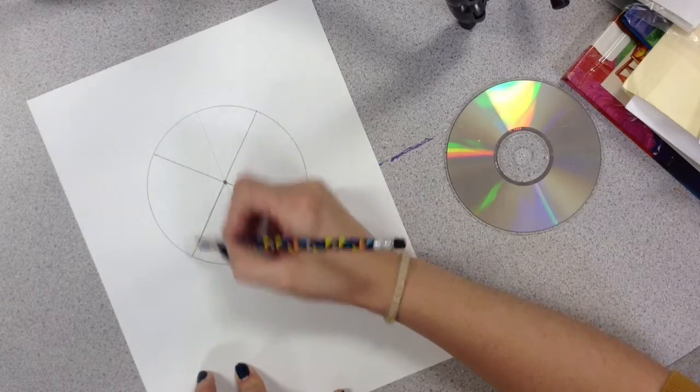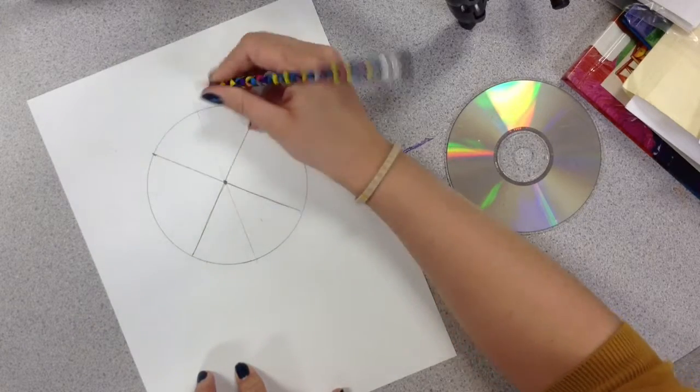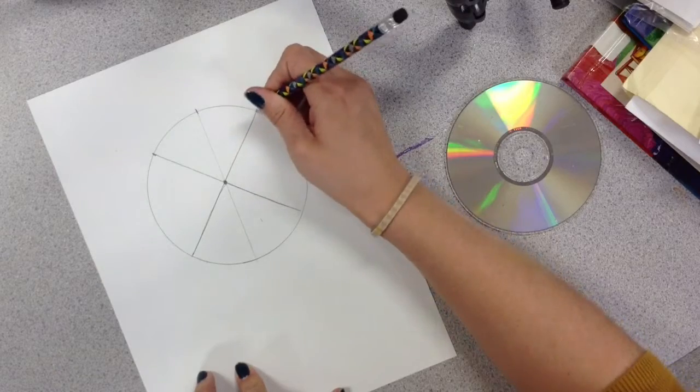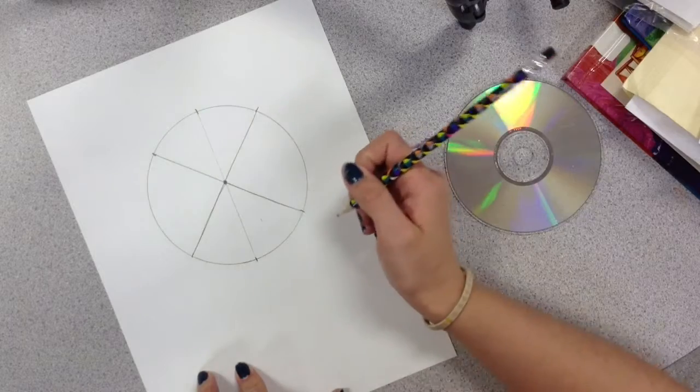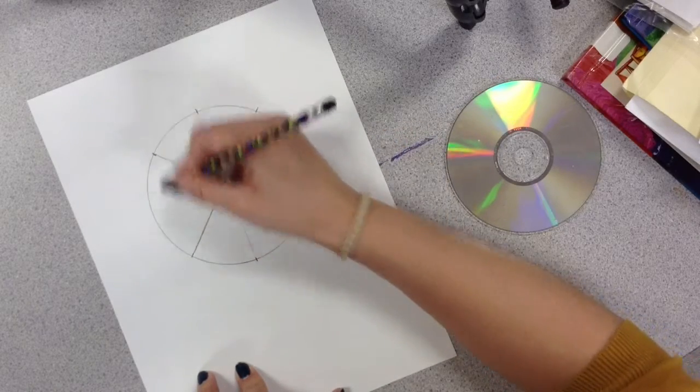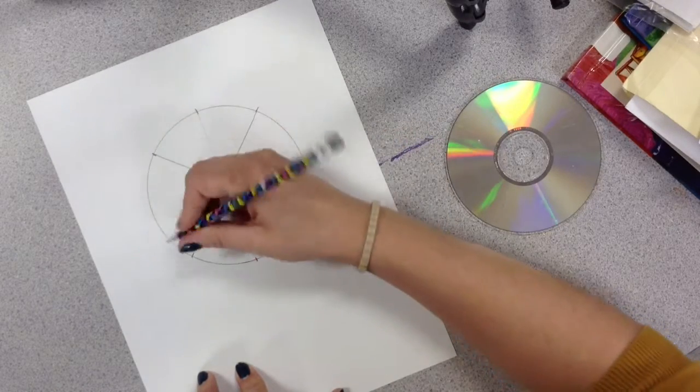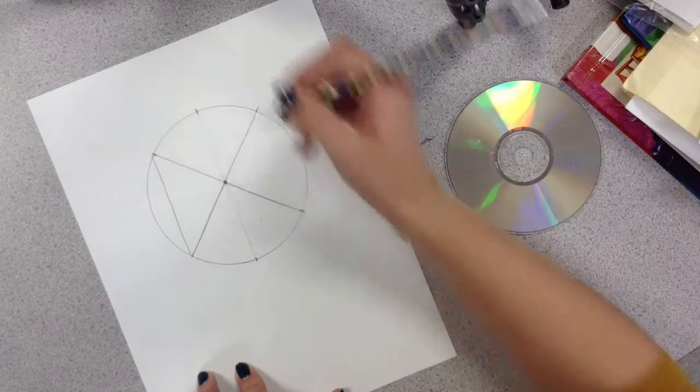So we've got these little points here. We're not going to change these spots at all. All the places where these points touch, they're going to stay. But between here and here, maybe A and B, I'm going to make a curved line, just a little bit curved.